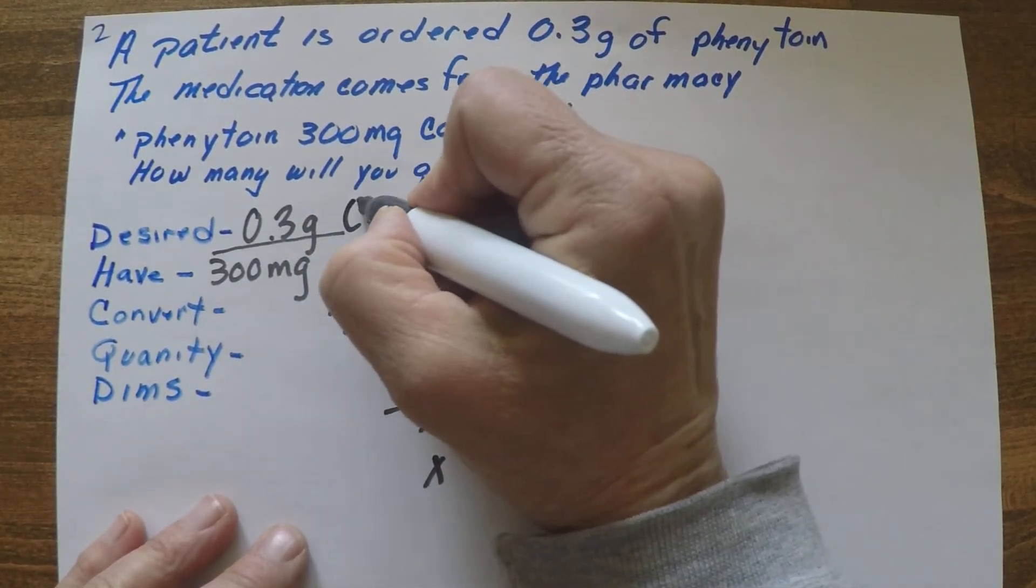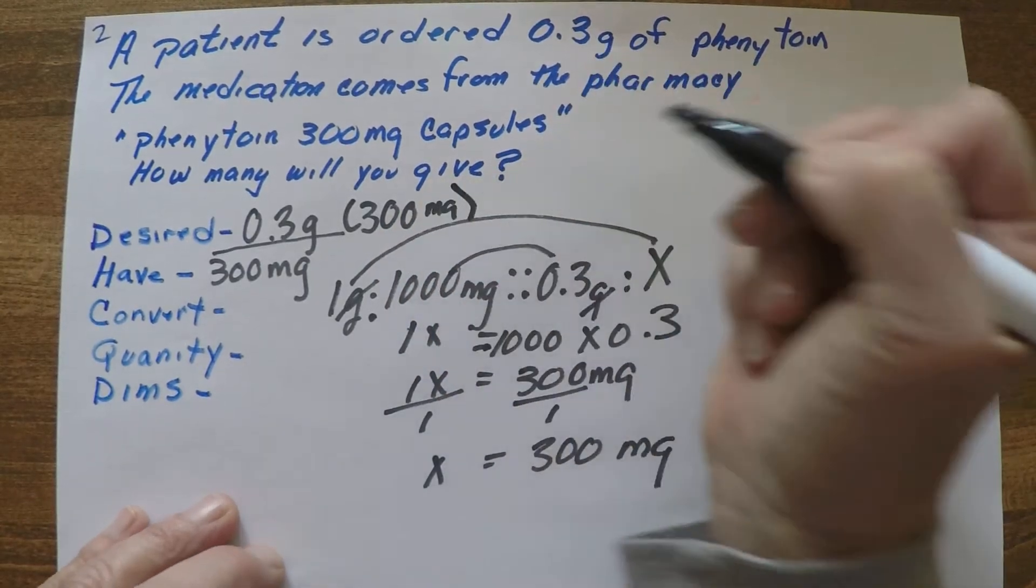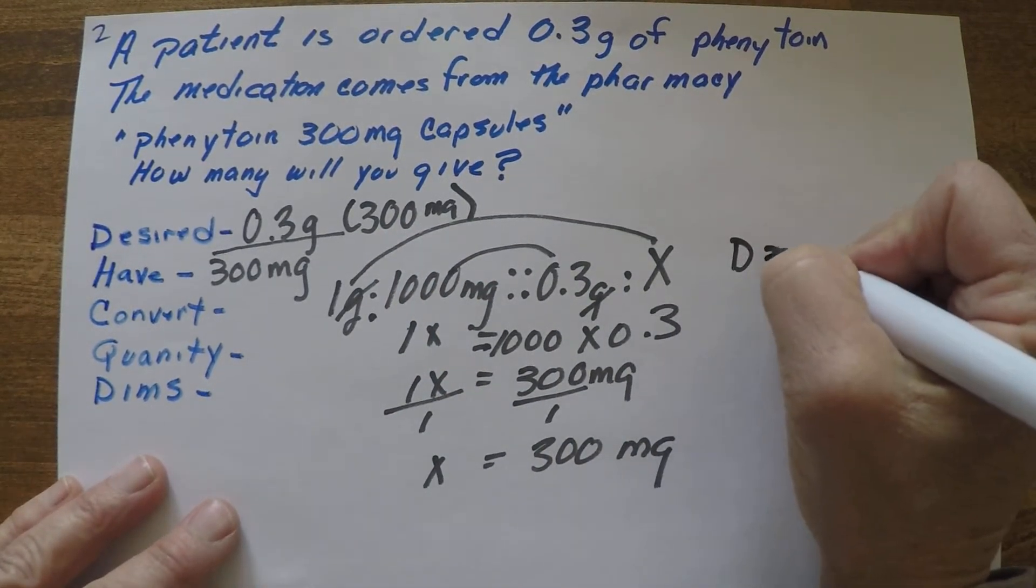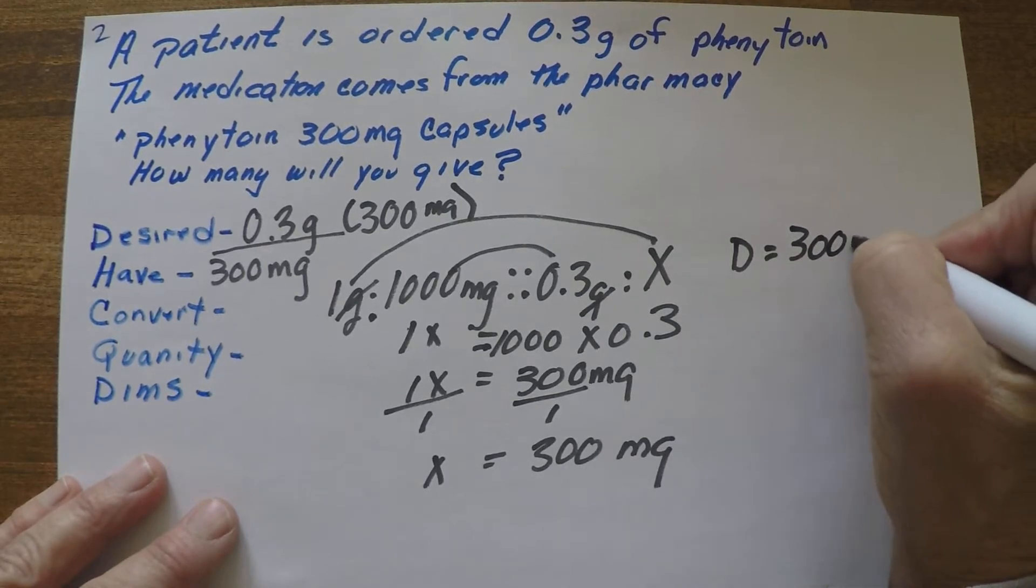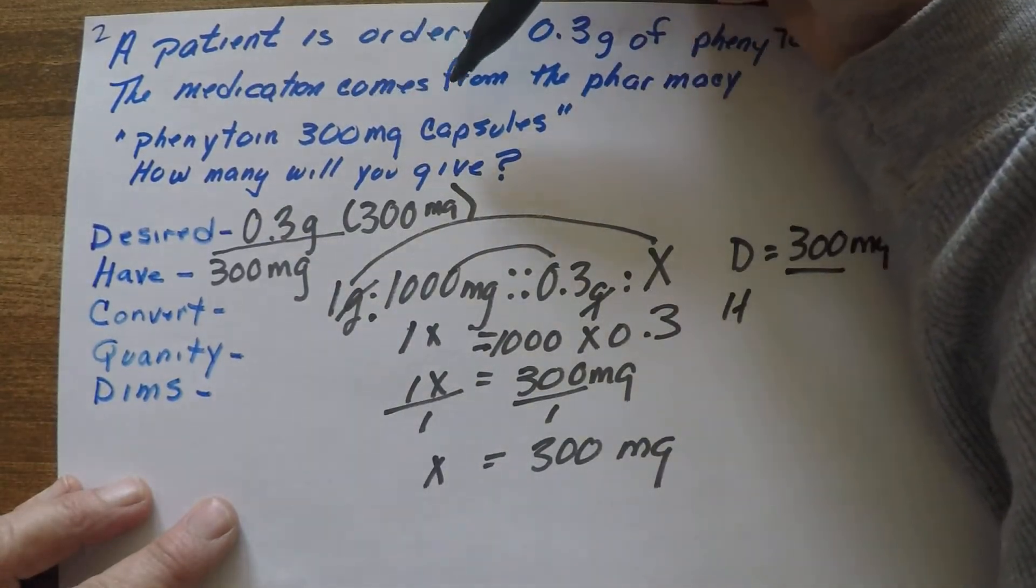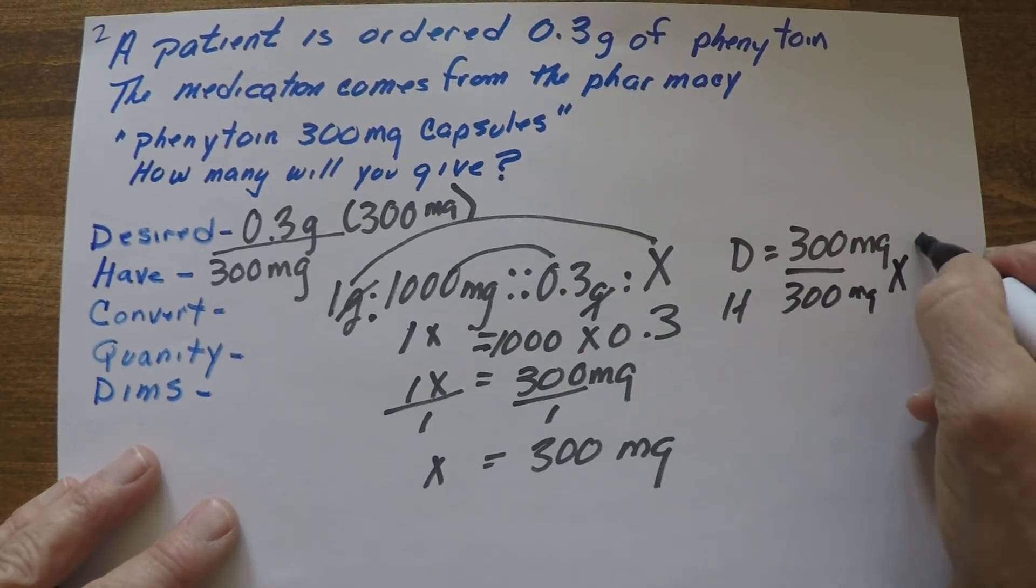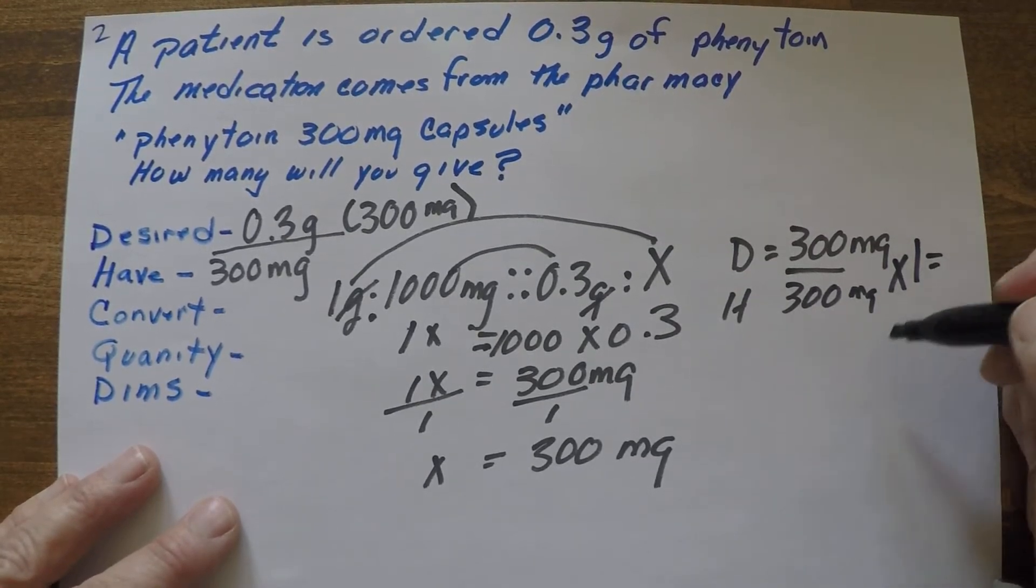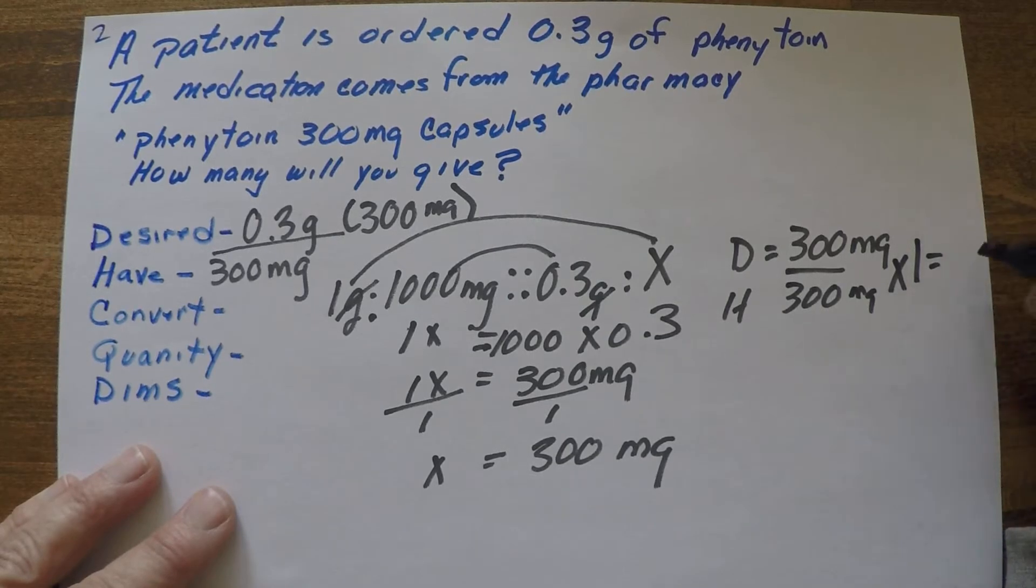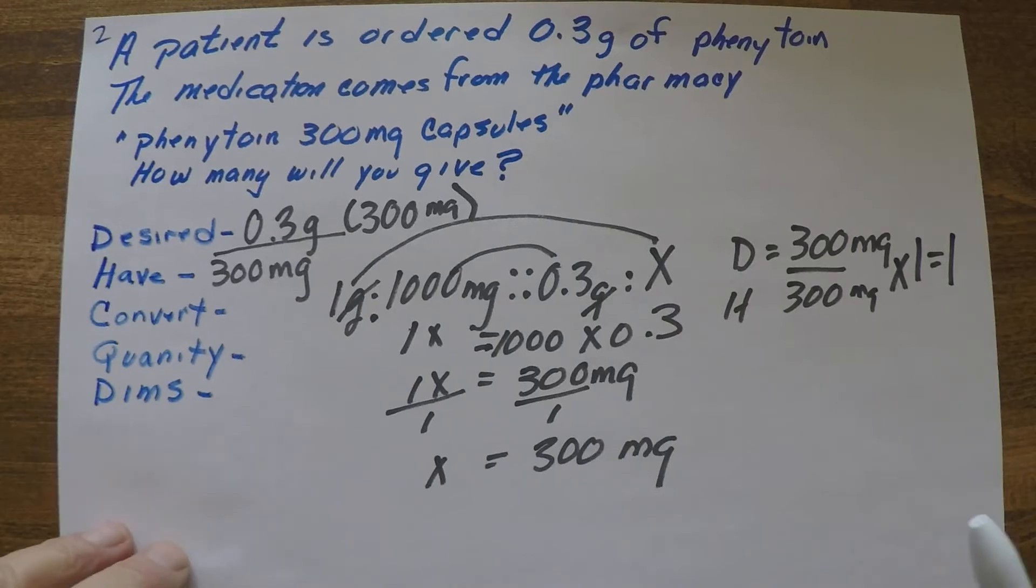So now we know that the desired is 0.3 grams or 300 milligrams. So let's plug our numbers in. Our desired is 300 milligrams, we have phenytoin 300 milligrams capsules, 300 milligrams times one capsule. And 300 divided by 300 is 1, so we're going to be giving one tablet or one capsule. Let's try one more.